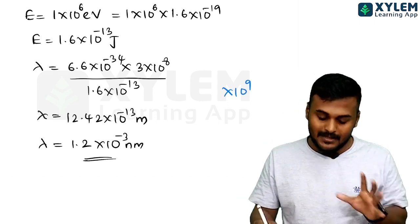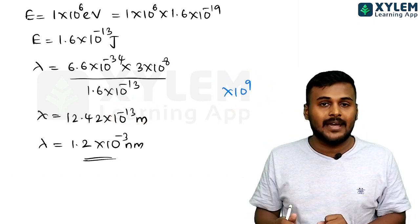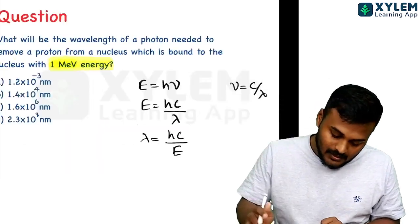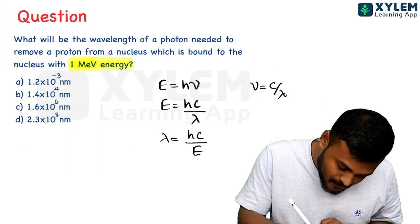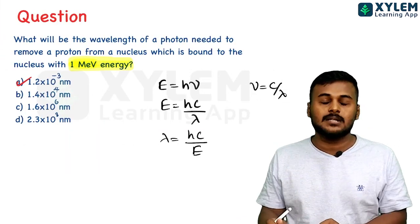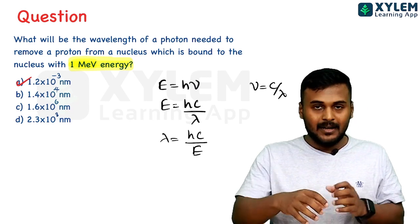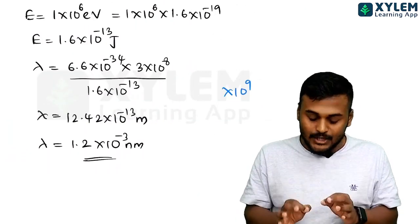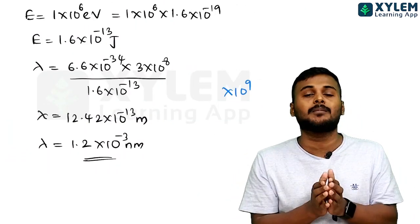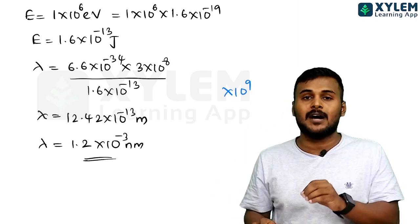If we multiply by 10 raise to 9 to convert to nanometers, we get the answer. Option A is the right answer. We change the final answer to the desired unit — nanometers — by multiplying by 10 raise to 9.